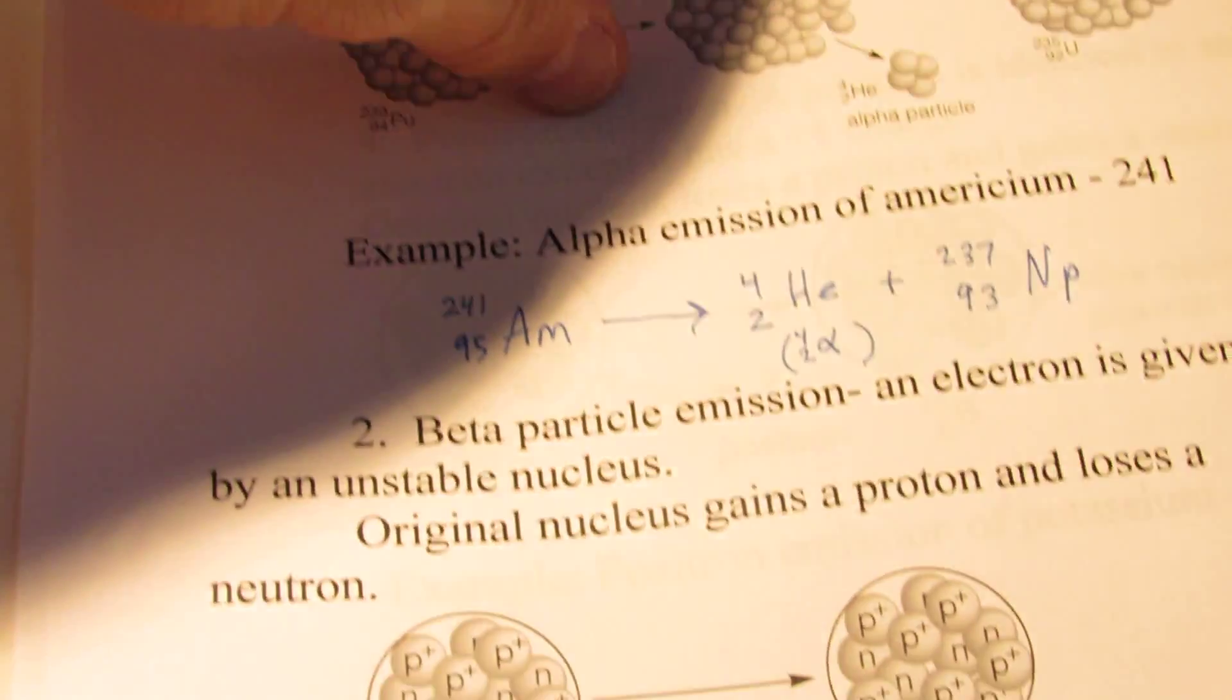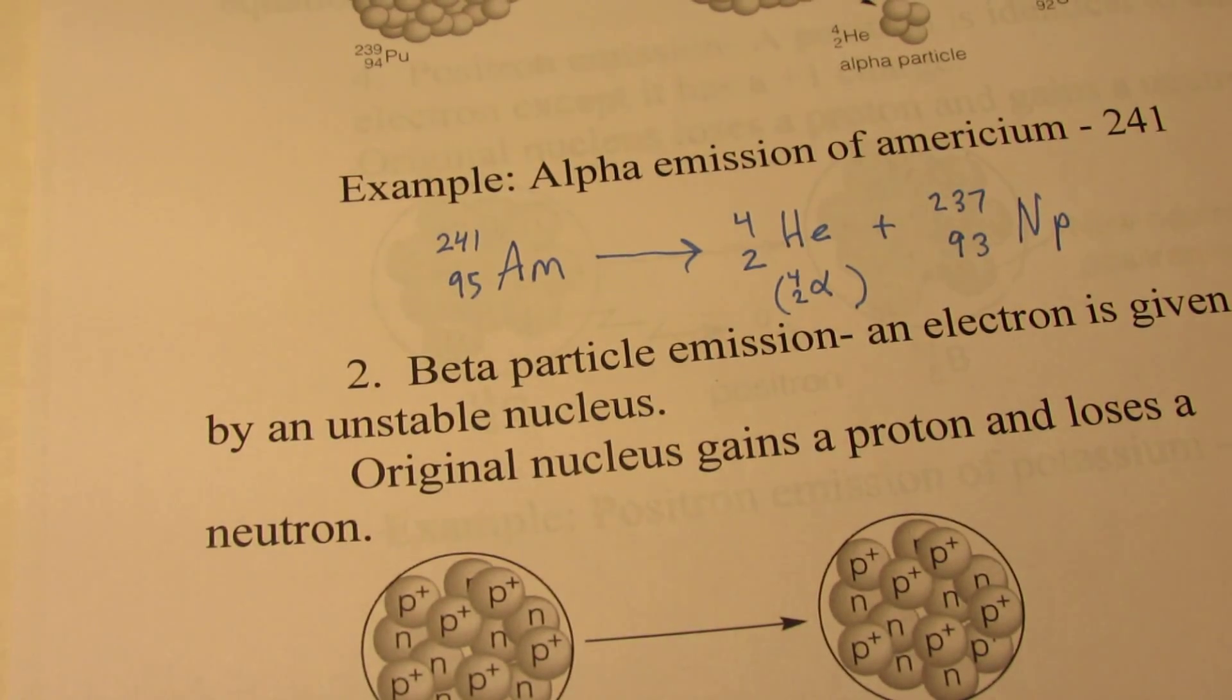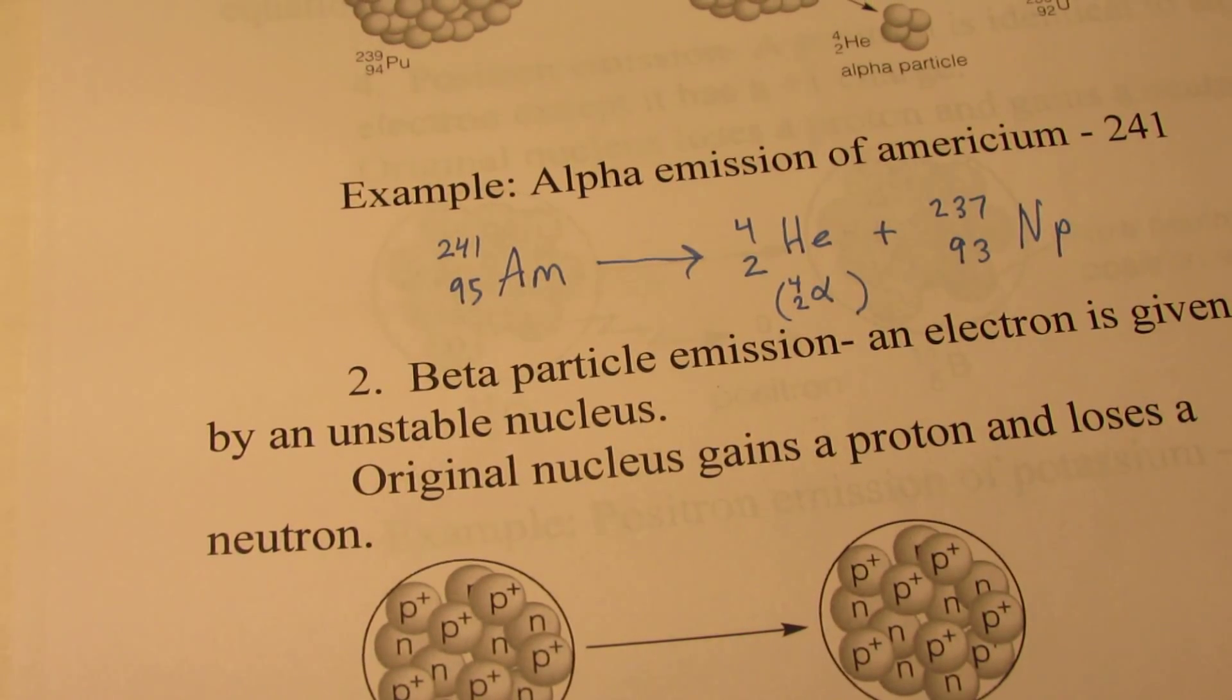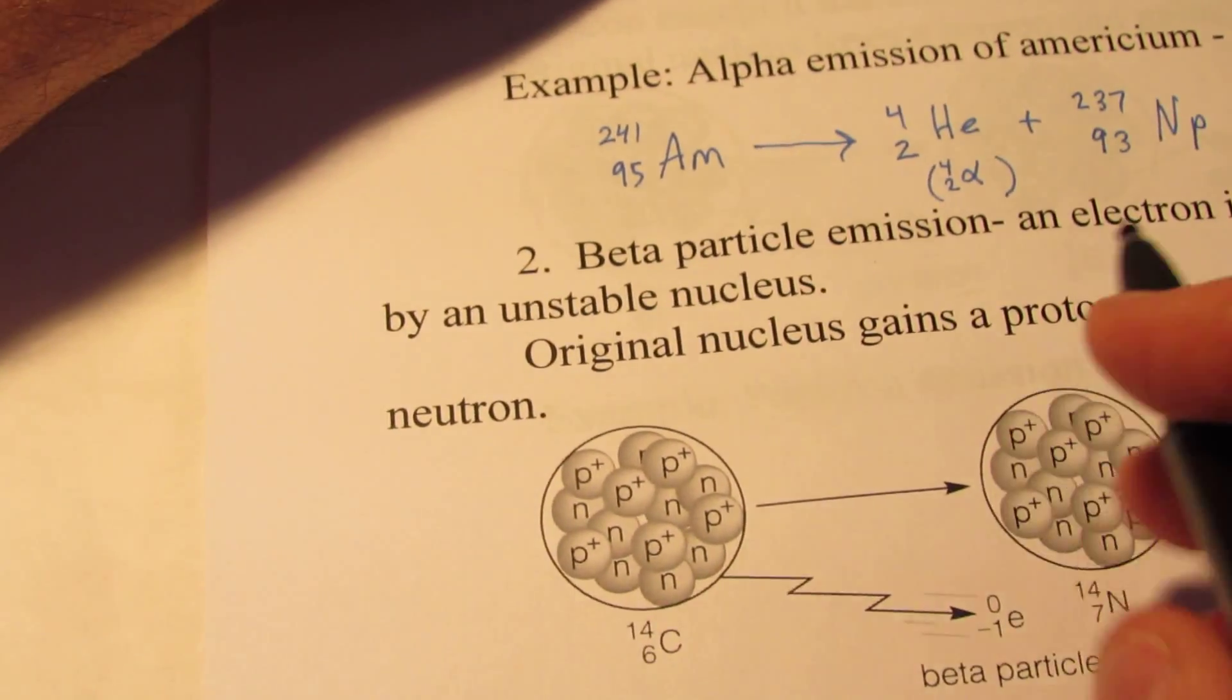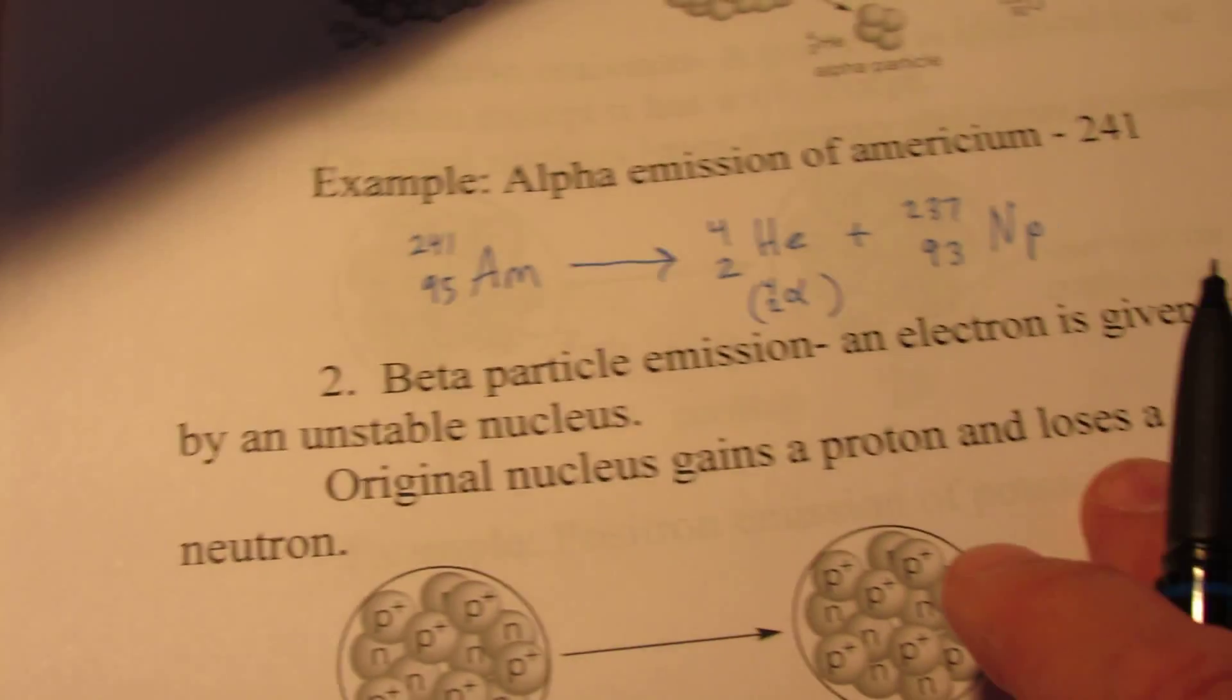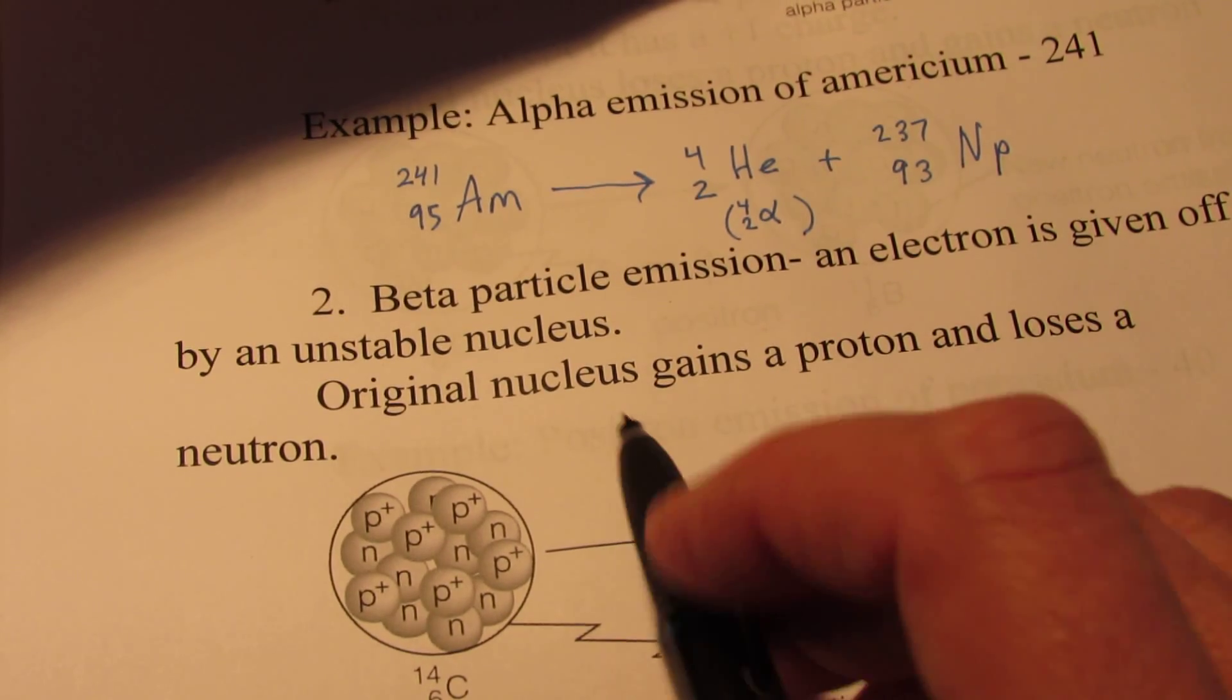Next up is beta emission. And in this case, an electron is given off by an unstable nucleus. Now that sounds a little bit unusual - an electron is given off by an unstable nucleus? How can that happen?